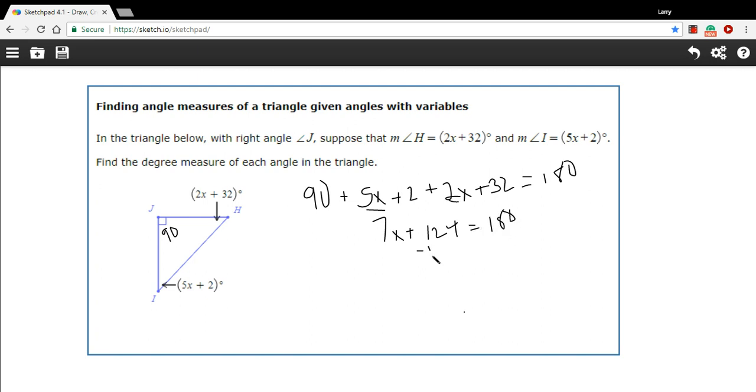So I can subtract 124 to get the x term alone. And that's going to give me 56, and 7x over here, divide by 7. And we get x equals 8.